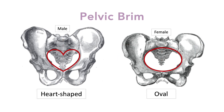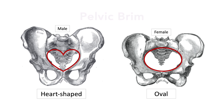Second, the pelvic brims differ between the male and female pelvis. The pelvic brim is the superior edge of the pelvic inlet. In males, the pelvic brim is heart-shaped, and in females, it is oval. The broad, shallow pelvic brim and inlet of the female pelvis is adapted for the development and passage of a large-brained human infant.